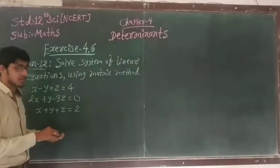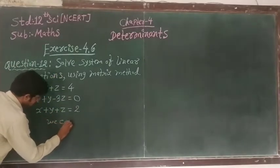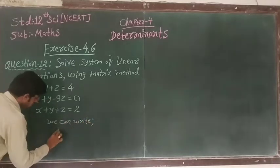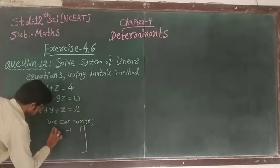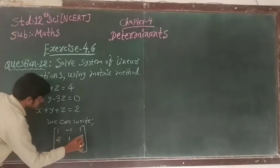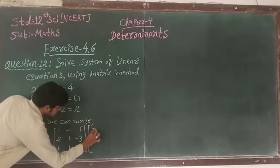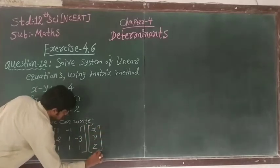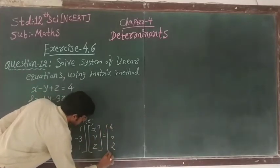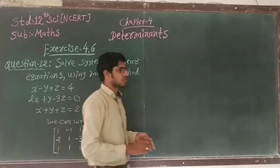We have to write the matrix form first. So we can write the coefficient matrix as [1, -1, 1; 2, 1, -2; 1, 1, 1] with variable matrix [x; y; z] equals [4; 0; 2]. This can be written as AX equals B.